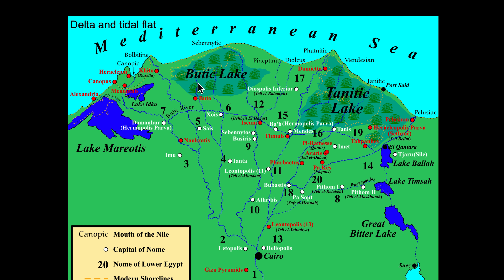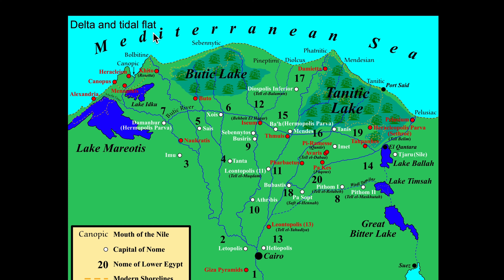When we look at deltas and tidal flats, we use the example of the River Nile flowing into the Mediterranean Sea, with sub-deltas including Boutic Lake and Tenetic Lake as freshwater reserves. The Nile delta is shaped like the Greek letter delta, which is why it has that name. Tidal flats are regions variably covered by water at high tide and exposed at low tide.